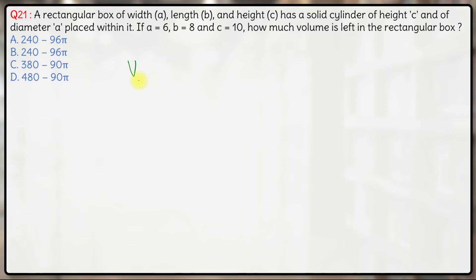So let us just calculate the volume of the rectangular box. The volume will be 6 into 8 into 10 which is 480.